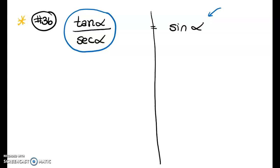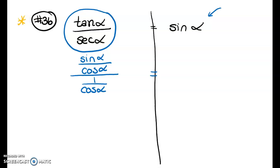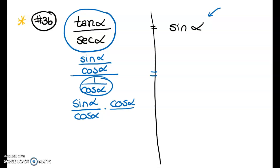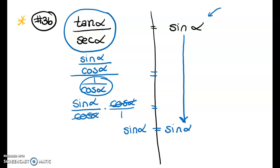The left side looks way more complicated than the right, so I'll change the left side. I'll convert everything to sine and cosine: tangent is sine α / cosine α, and secant is 1/cosine α. Dividing by a fraction is the same as multiplying by its reciprocal, so the cosines cancel out, leaving sine of alpha.